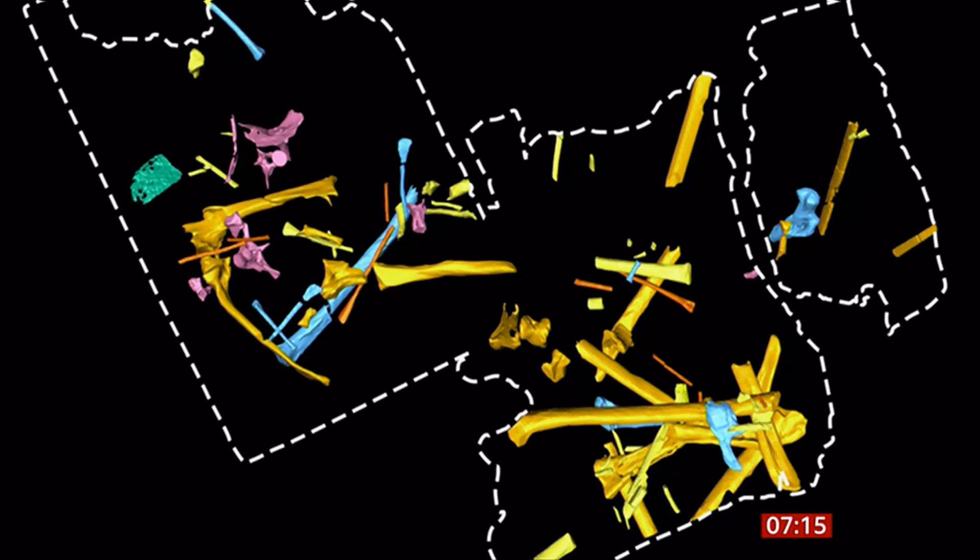And there they've coloured the different sections of the skeleton as they appear embedded in the rock and separated them, so you get a sense of what it looked like. Not terribly obvious, is it?